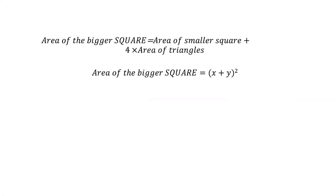The smaller square has side length Z, and since a square has all sides equal, the area of the smaller square is Z squared.